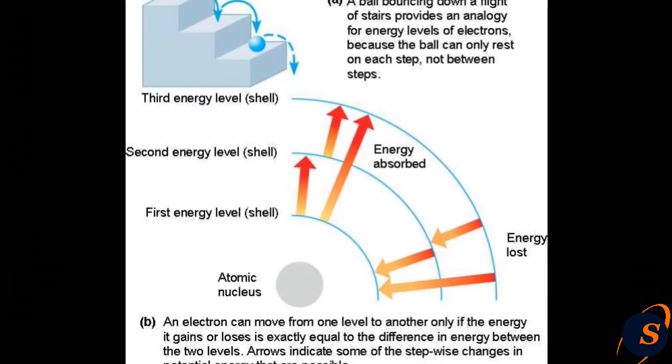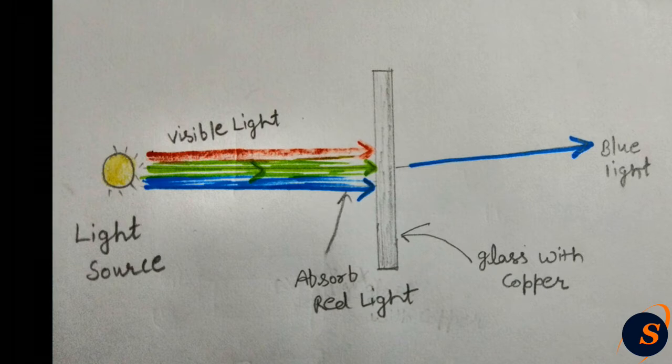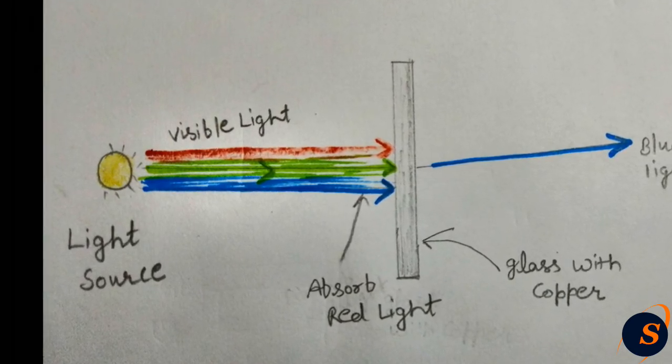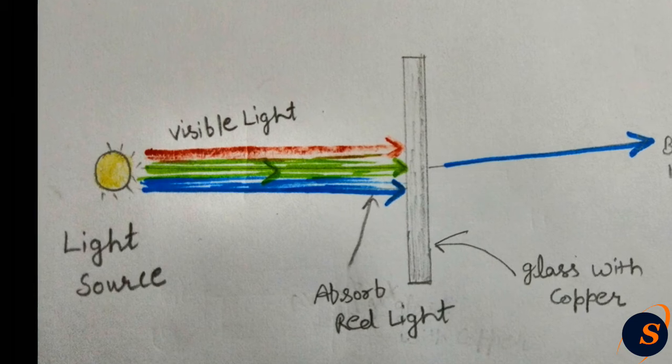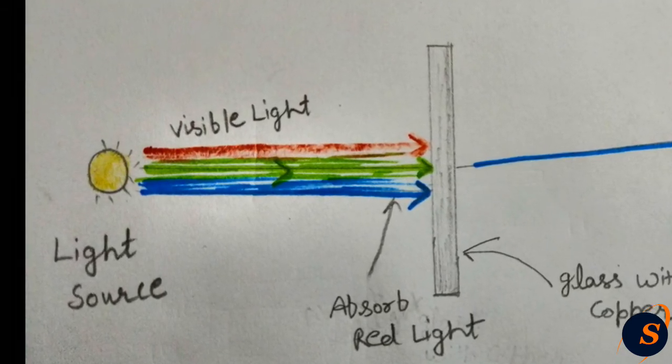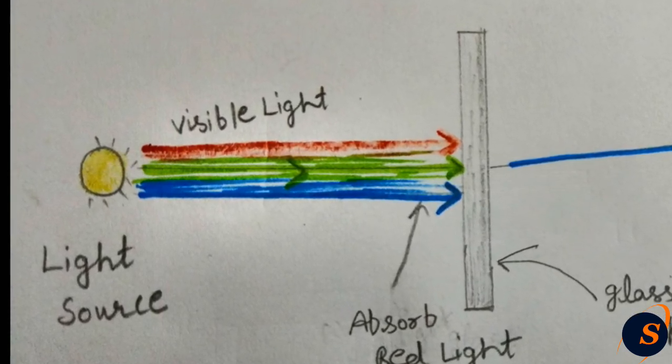And now take the example of clear glass. Clear glass does not have as many electrons with energy levels that absorb visible light. However, it does absorb frequencies slightly higher than visible light, like ultraviolet, and slightly below visible light, that is infrared.